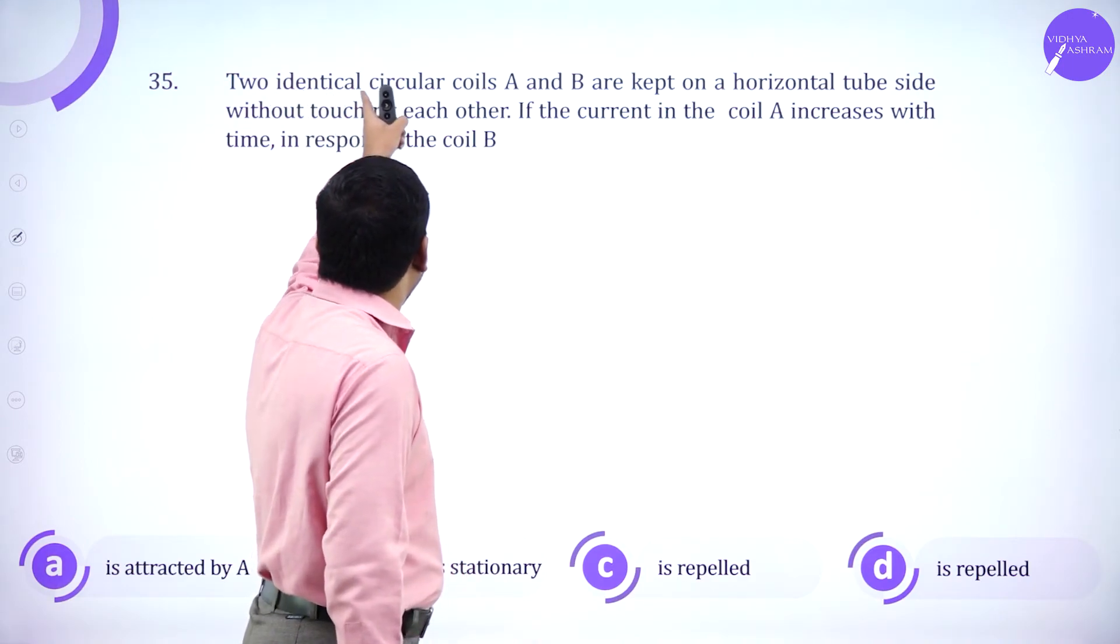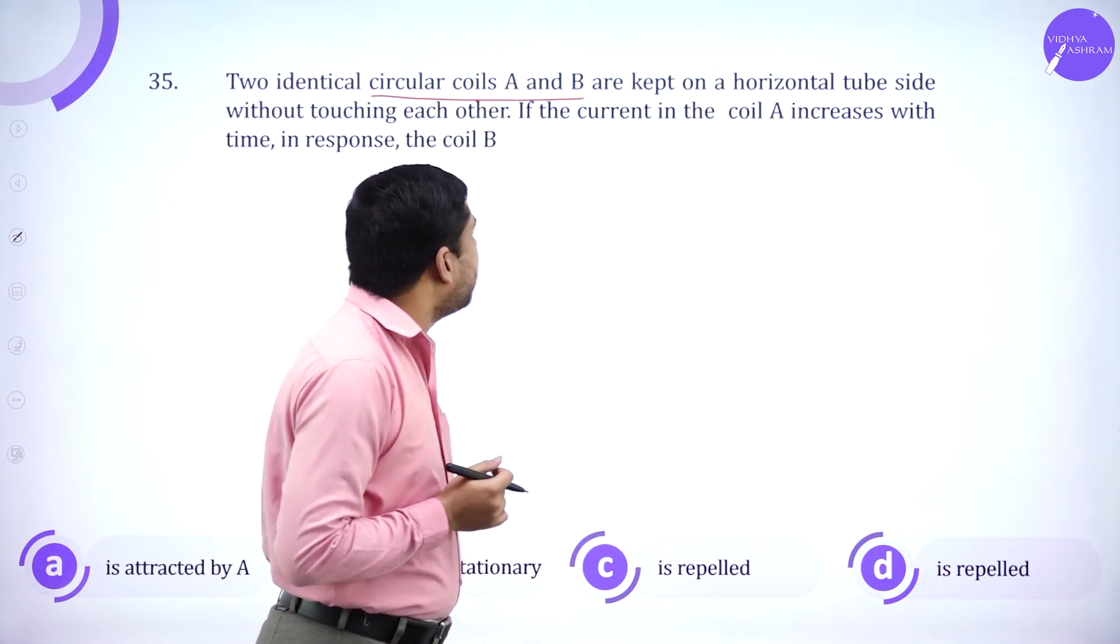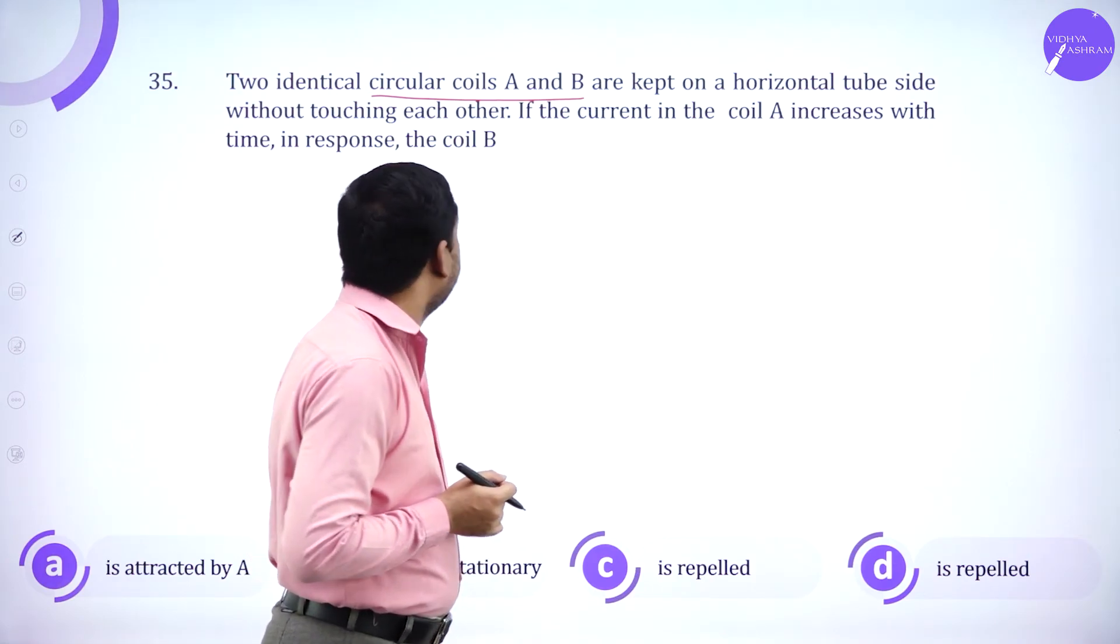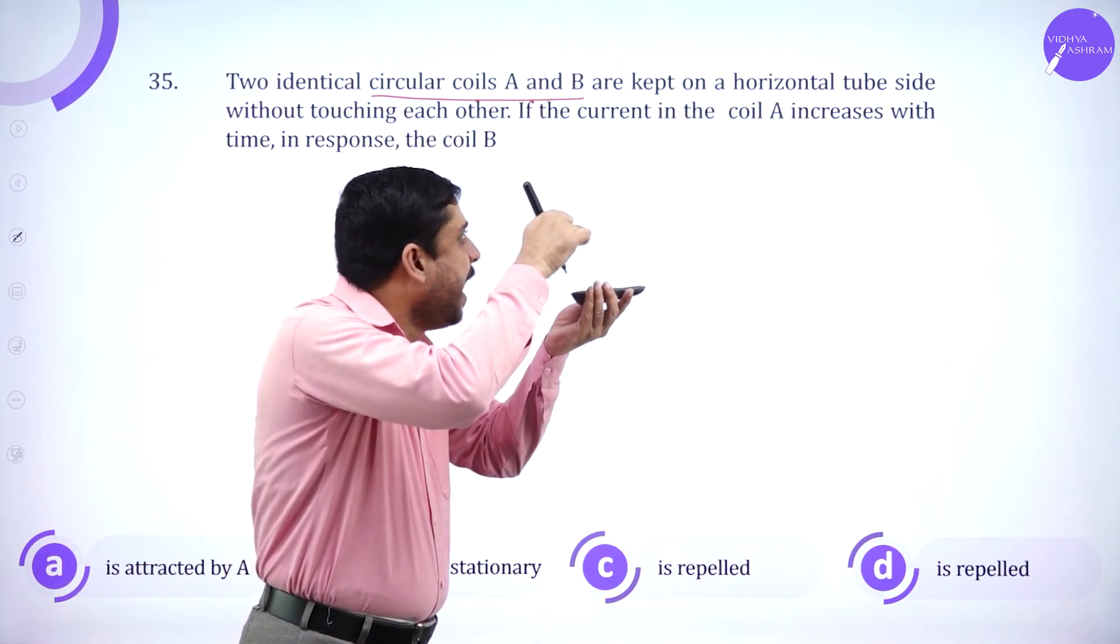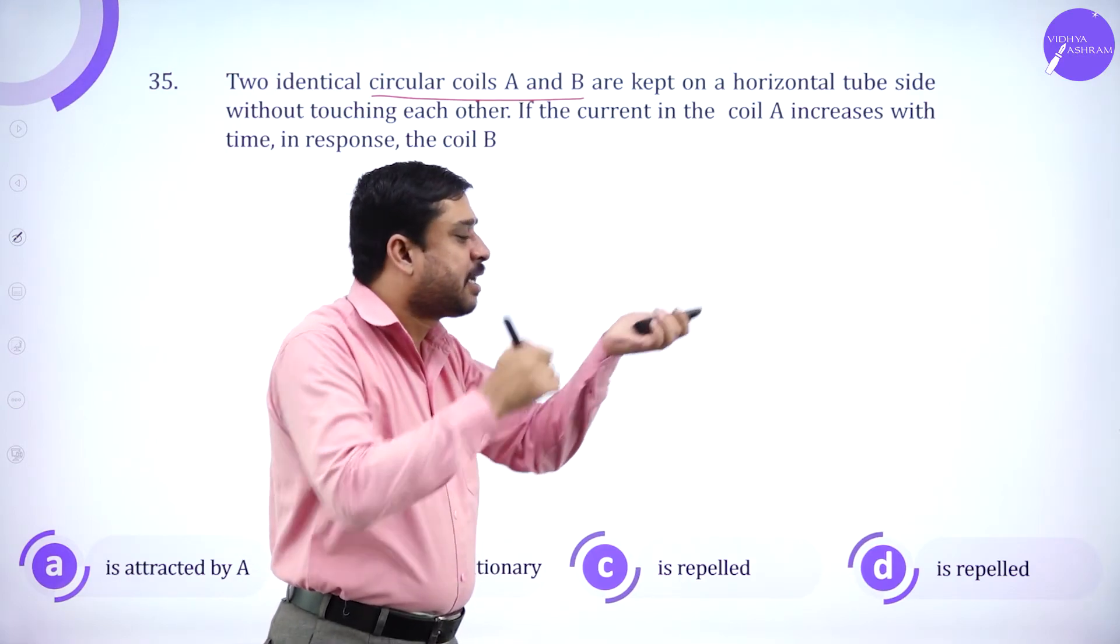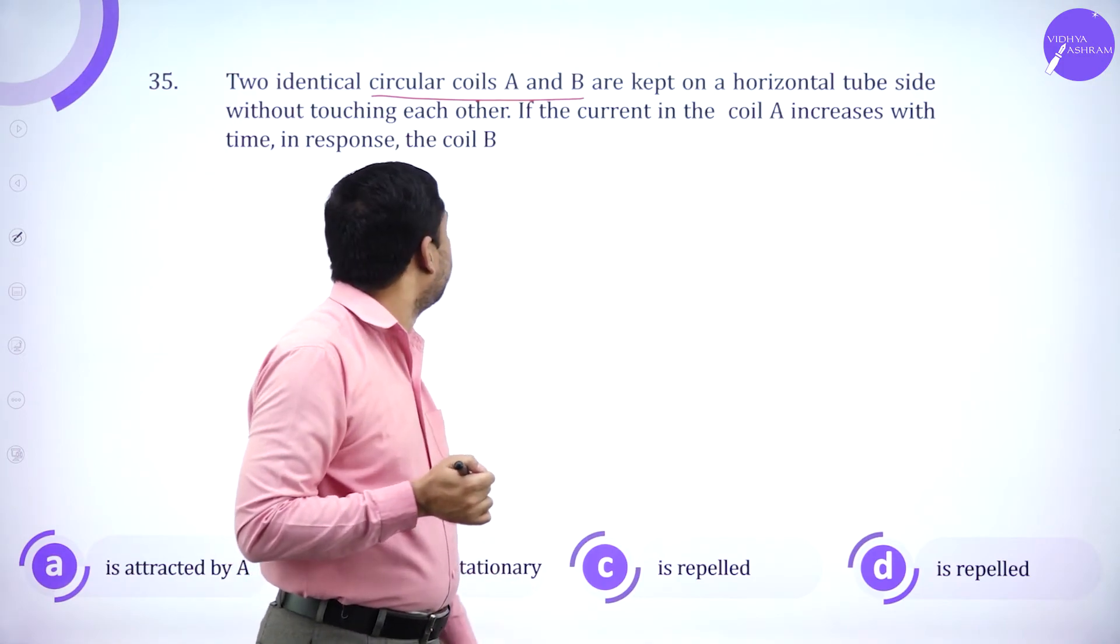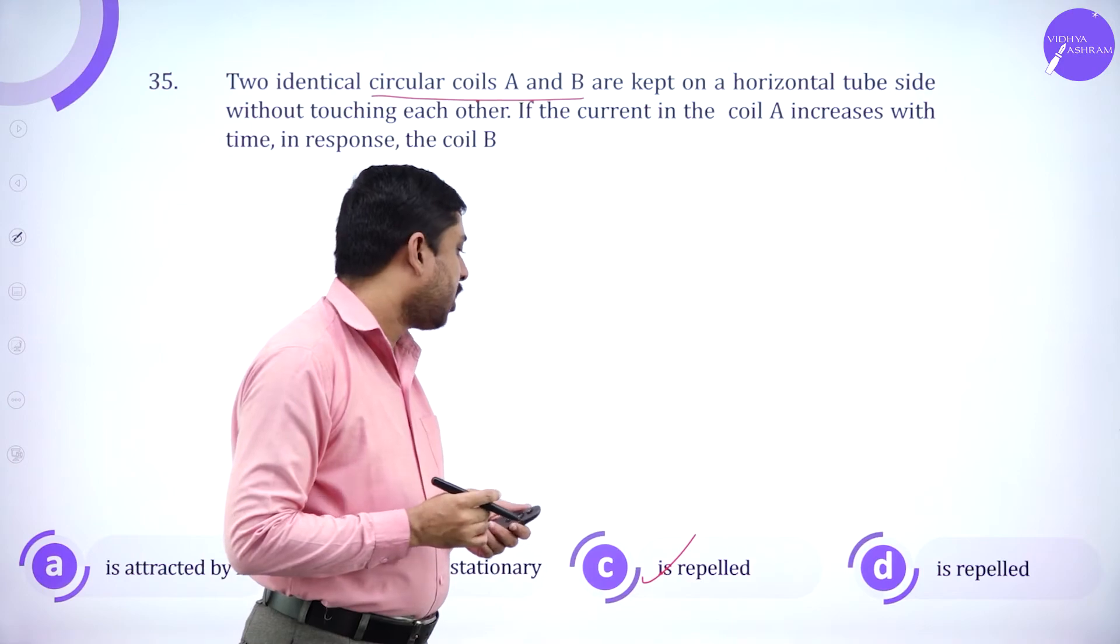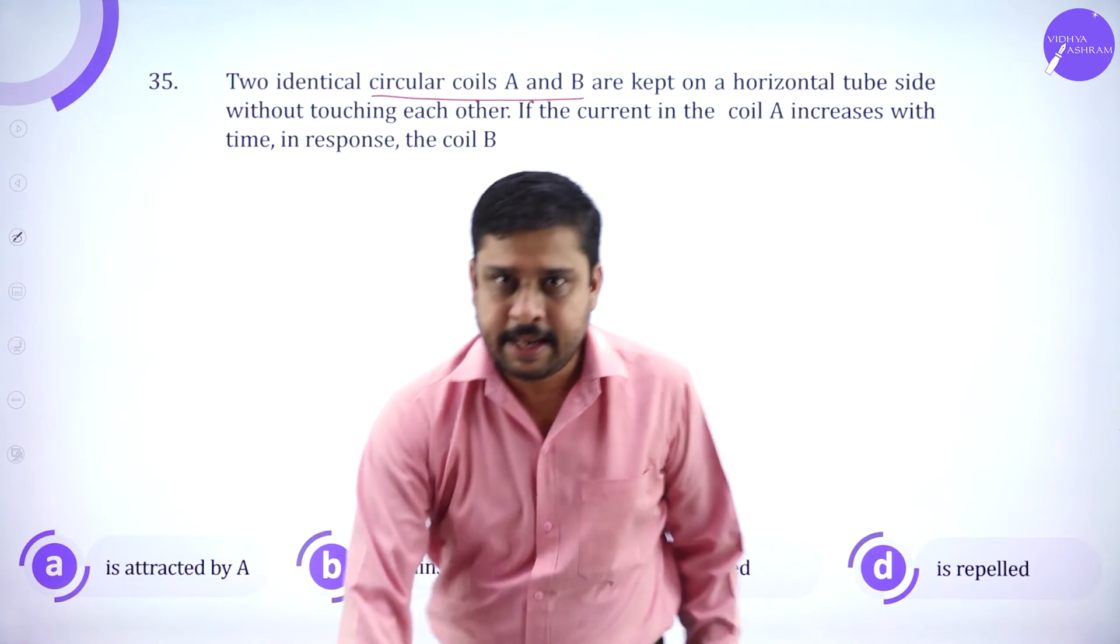2 identical coils, circular coils, A and B are kept on a horizontal tube side without touching each other. On a horizontal tube, one end there is A, the other end is B. If the current in coil A increases with time, the response of coil B is, it is repelled by coil A. So repulsion happens here.